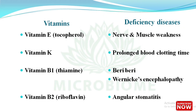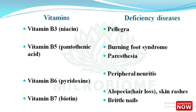Vitamin E, called tocopherol — deficiency diseases are nerve and muscle weakness. Vitamin K deficiency causes prolonged blood clotting time. Vitamin B1, called thiamine — deficiency diseases are beriberi and Wernicke's encephalopathy. Vitamin B2, called riboflavin — deficiency disease is angular stomatitis. Vitamin B3, called niacin — deficiency disease is pellagra. Vitamin B5, called pantothenic acid — deficiency diseases are burning foot syndrome and paresthesia. Vitamin B6, pyridoxine — deficiency disease is peripheral neuritis. Vitamin B7, biotin — deficiency diseases are alopecia, hair loss, skin rashes, and brittle nails.